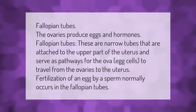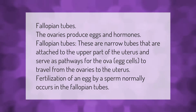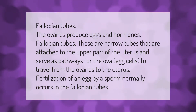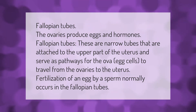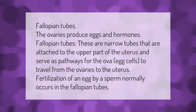The ovaries produce eggs and hormones. Fallopian tubes are narrow tubes that are attached to the upper part of the uterus and serve as pathways for the ova, or egg cells, to travel from the ovaries to the uterus. Fertilization of an egg by a sperm normally occurs in the fallopian tubes.